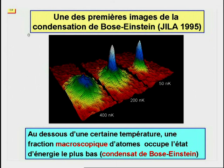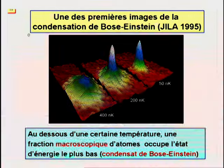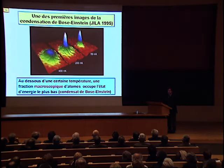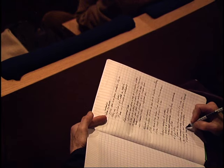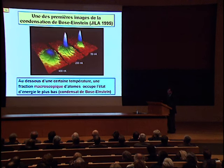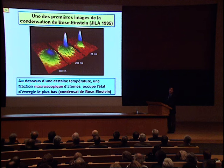Cette image montre l'effet de la condensation. Après avoir refroidi le gaz, on coupe les pièges magnétiques et le gaz rentre en expansion. L'expansion est importante pour pouvoir prendre des images du gaz avec les lasers. À haute température, la distribution des densités observées a une forme molle. Mais aux températures plus froides, on voit apparaître un pic très pointu. Ce pic est dû aux atomes initialement concentrés au centre du piège. Ce sont les atomes du condensat qui peuplent l'onde macroscopique de matière.